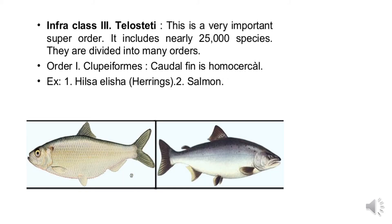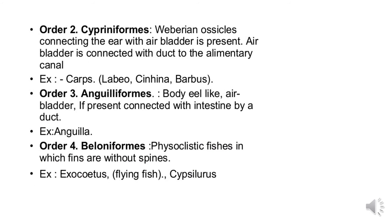The third infra-class of Actinopterygii is Teleostei, a very important super-order that includes nearly 25,000 species and many orders. Order 1 is Clupeiformes, which includes species with a homocercal tail fin. An example is Hilsa alosa. Order 2 is Cypriniformes (Ostariophysi), where Weberian ossicles connecting the ear with the air bladder are present. The air bladder is connected by a duct to the alimentary canal. An example is Cyprinus (carp).